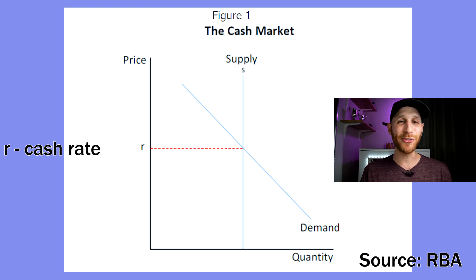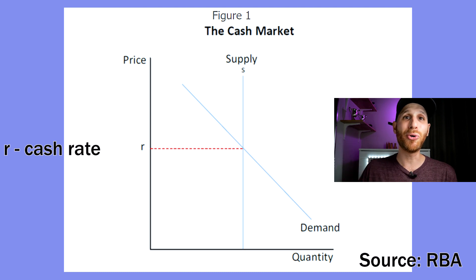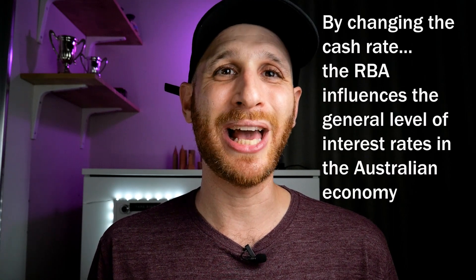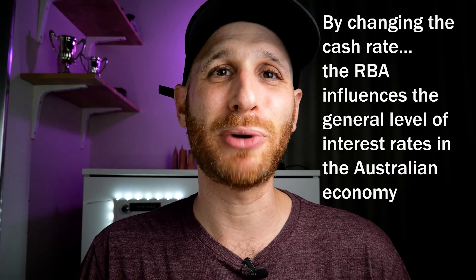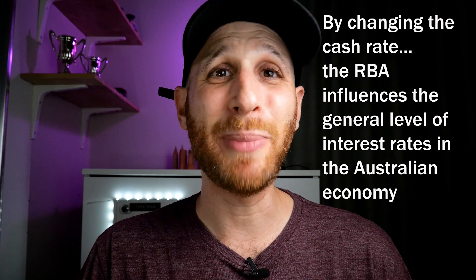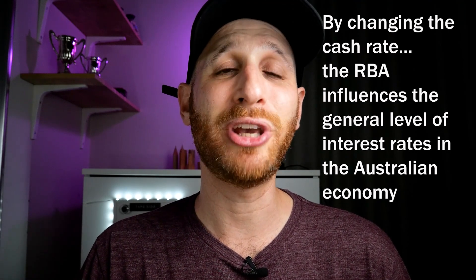The RBA goes into that Australian cash market, changes the cash rate, and then that affects banks, and then that affects all of the interest rates in the Australian economy. So when the RBA changes the cash rate, borrowing rates will change, personal loans will change, rewards for savers will also change — all of these things will move. Probably a better way to explain it is that the RBA influences interest rates in the economy by making changes to the cash rate.